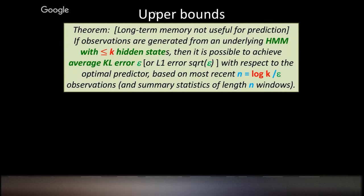The main takeaways: you're making good predictions by remembering a very small amount of information about the past — only the most recent log(k/epsilon) observations. Your memory is small and also short, in the sense that you're only looking at the most recent observations. Interestingly, this doesn't depend on any property of the hidden Markov model. Even if the Markov model is extremely slow mixing, you still only need to look at the most recent log(k/epsilon) observations to make good predictions.